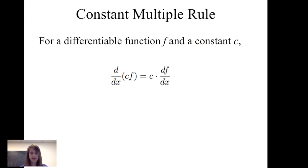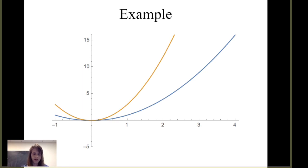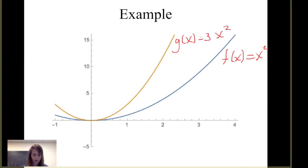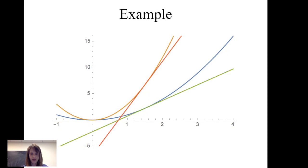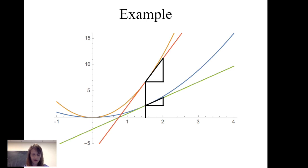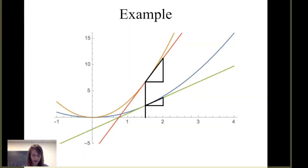Let's consider the constant multiple rule. If I have a differentiable function f and a constant c, the derivative of the constant times the function is simply the constant times the derivative of f with respect to x. From a graphical perspective, suppose f of x equals x squared and g of x equals 3 times x squared. Drawing tangent lines to each function at x equals 3 halves, the slope of the tangent line to g is 3 times the slope of the tangent line to f — for the same run of one half, the rise is 3 times as great.